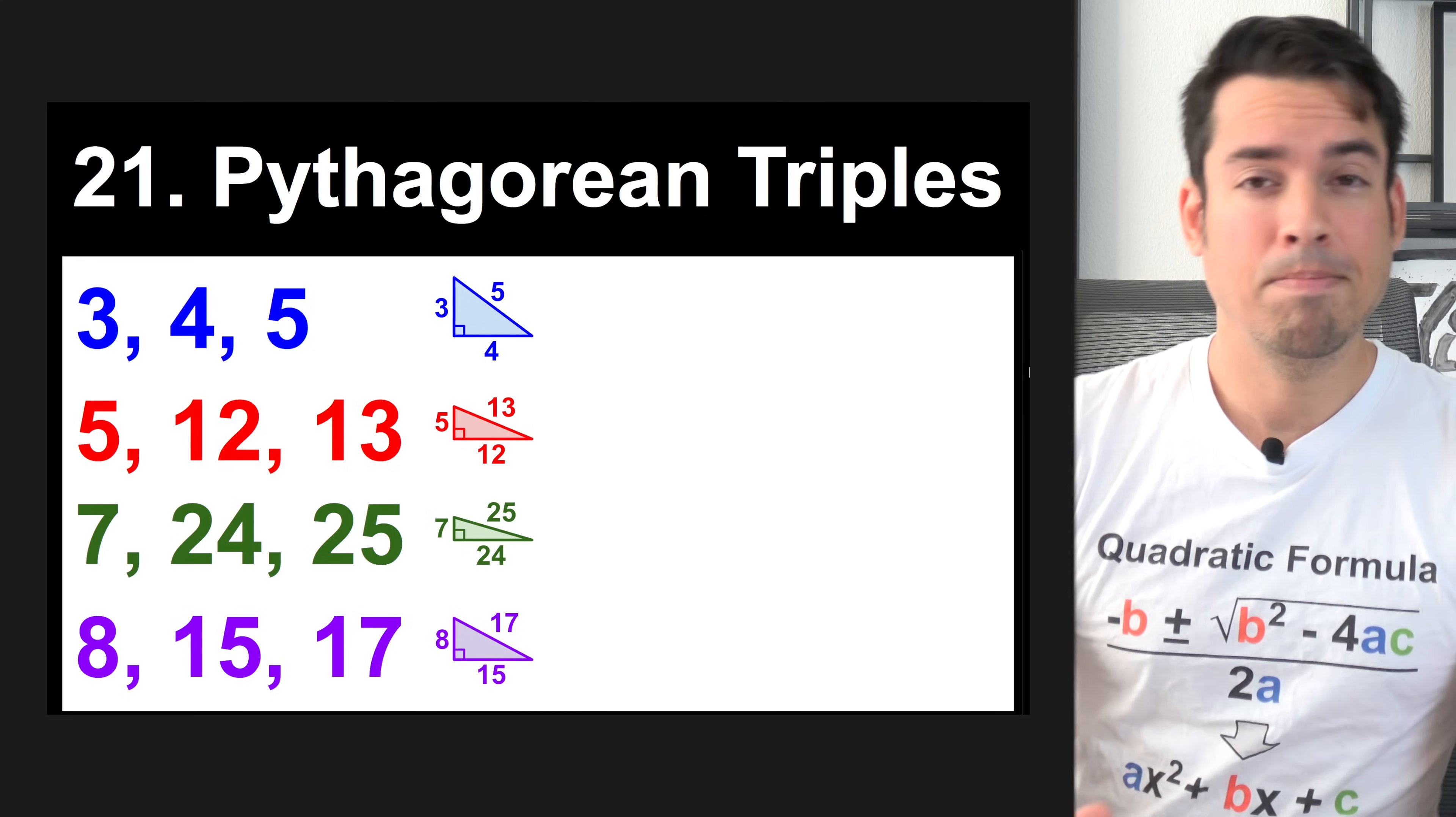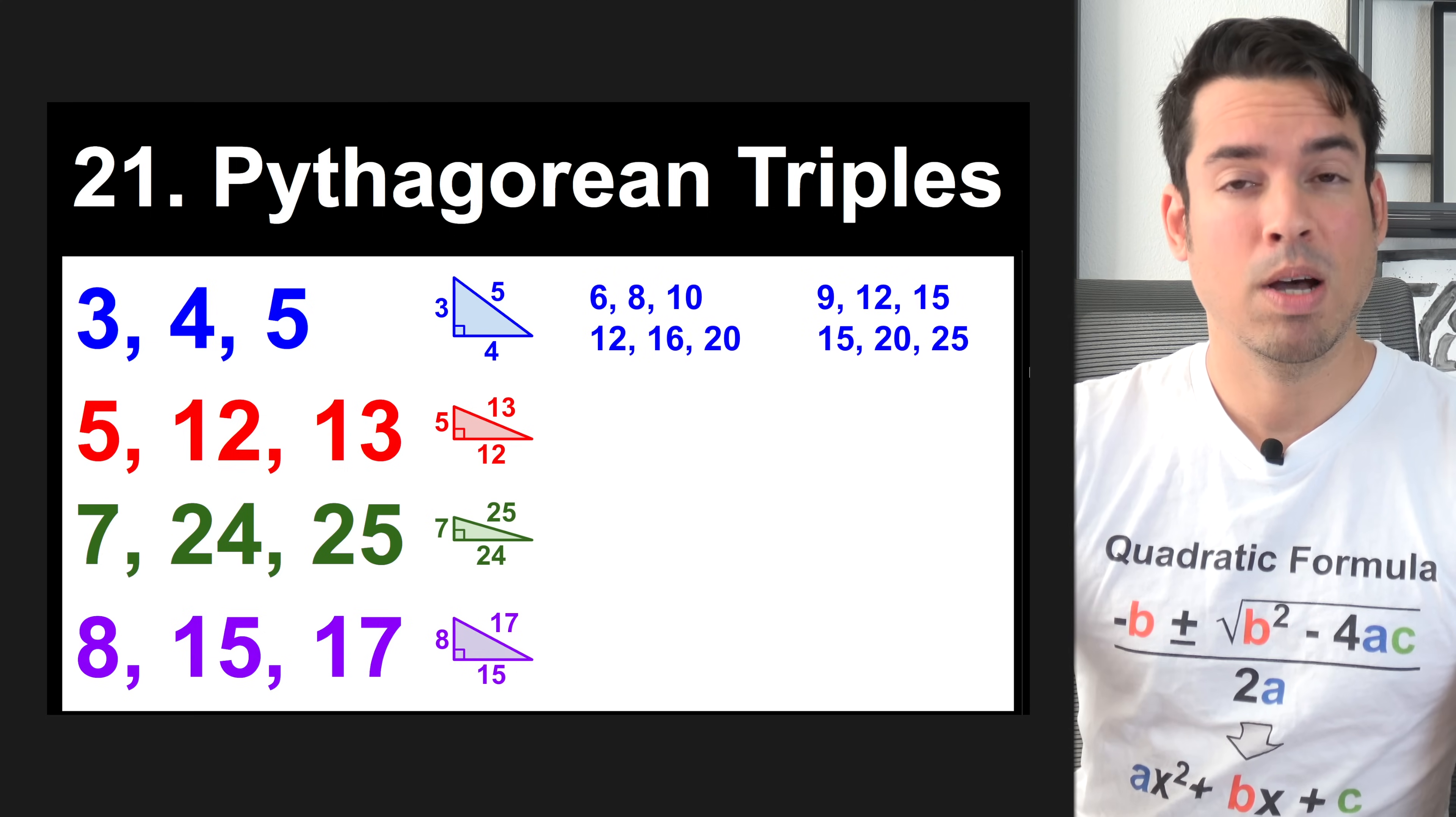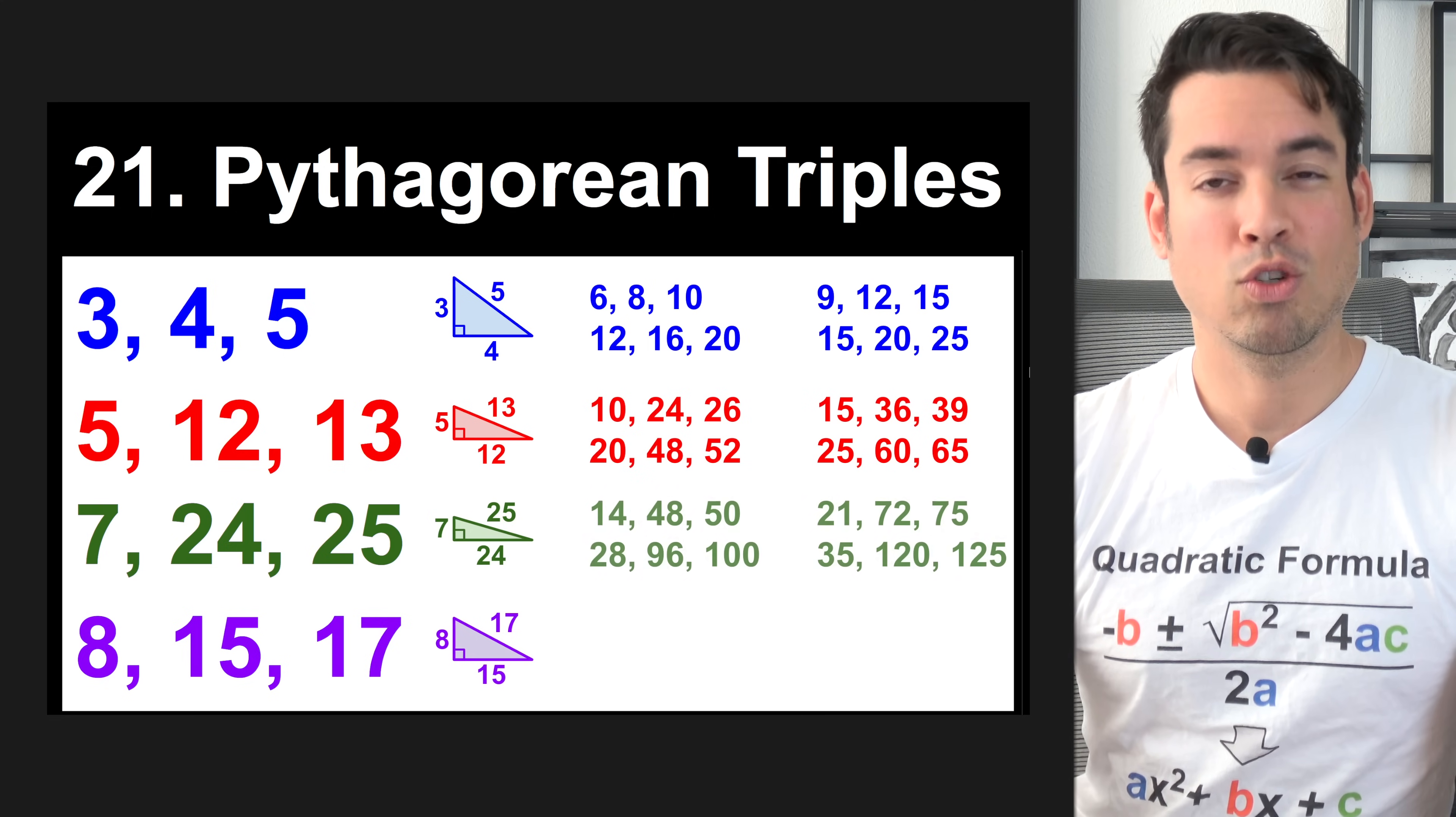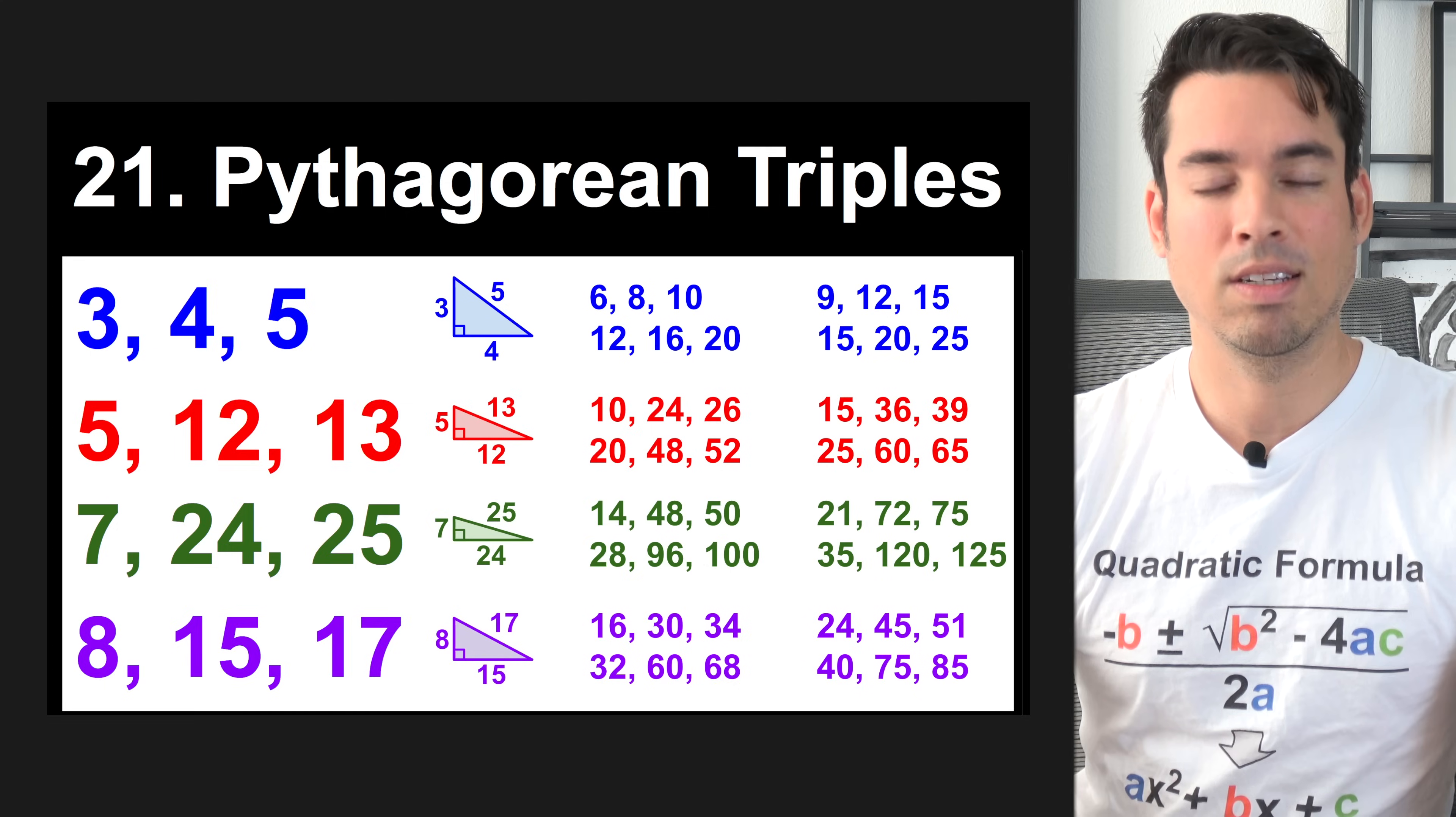Be aware that you'll also see multiples of these Pythagorean triples. For example, here are the different possibilities for larger 3, 4, 5 triangles. This is for 5, 12, 13, more for 7, 24, 25, and finally more for 8, 15, and 17 triangles.